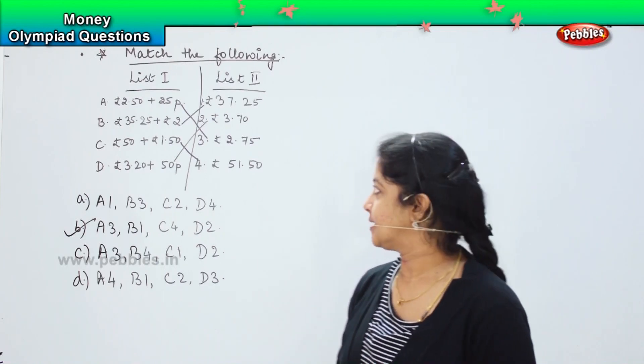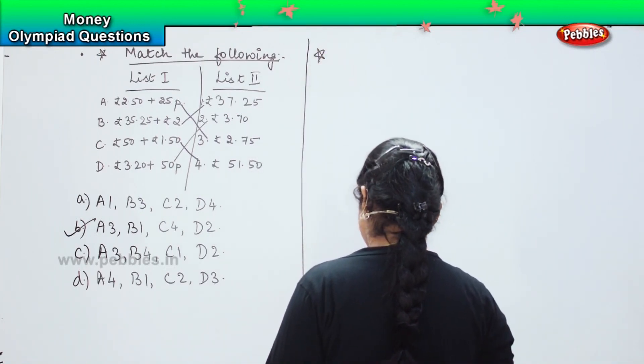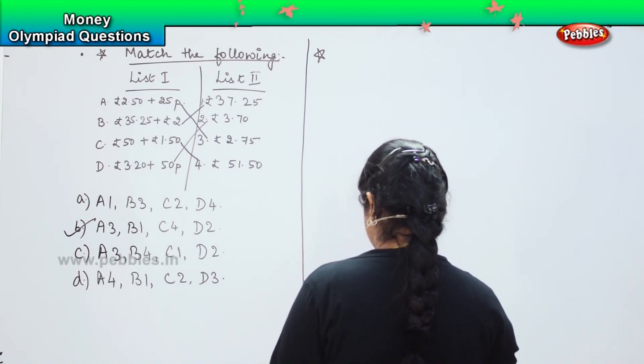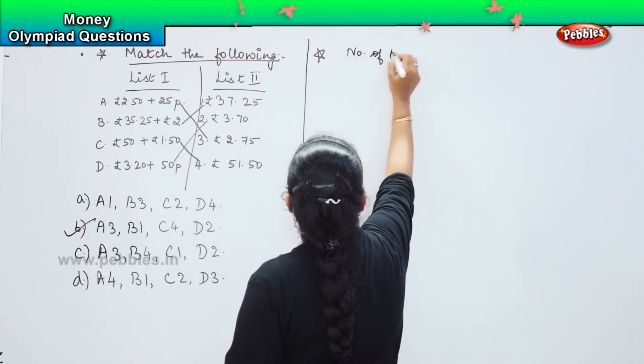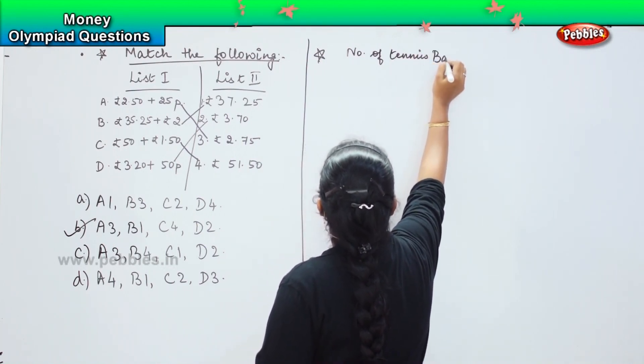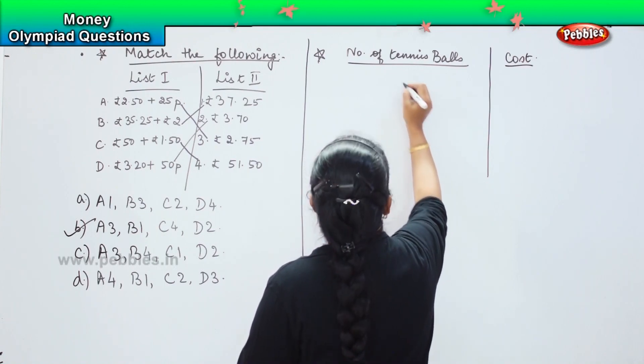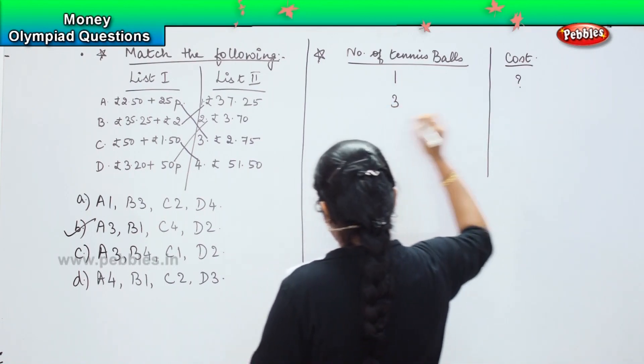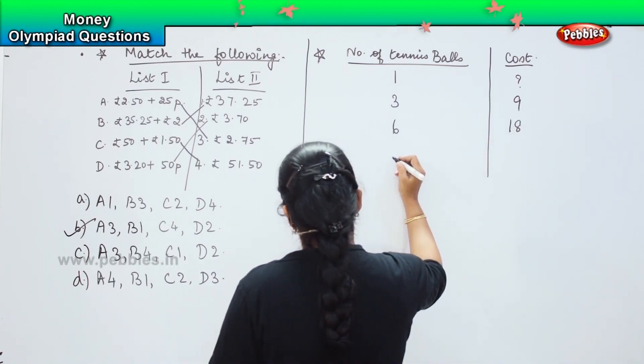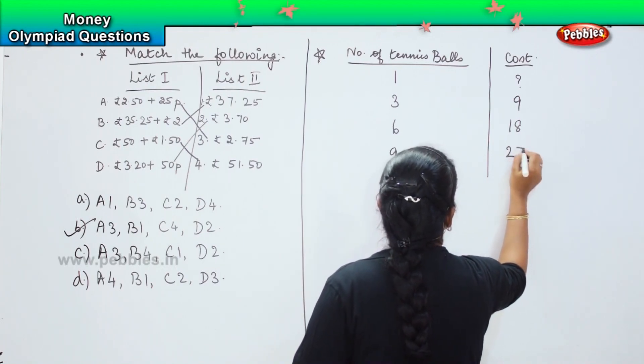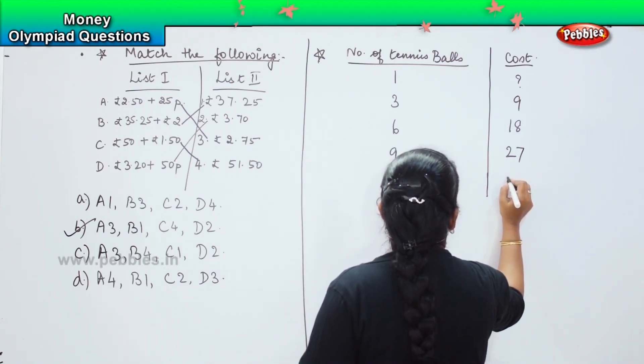Clear? Was it fun doing it? So, here is your next question. Your next question says number of tennis balls and the cost. So, if the ball is 1, you need to find the value. The ball is 3, the value is 9. If the ball is 6, the value is 18. If the ball is 9, it is 27. And if the ball is 12, then the value is 36.